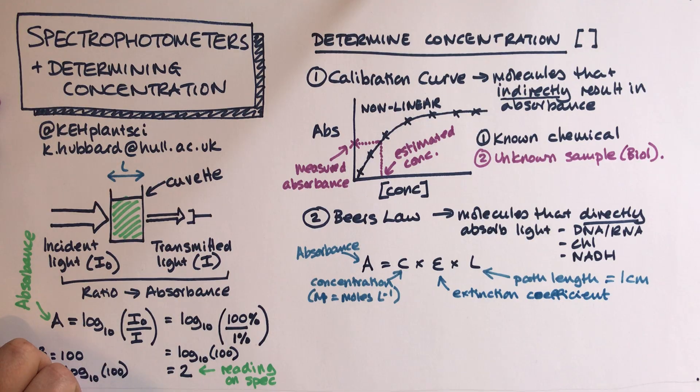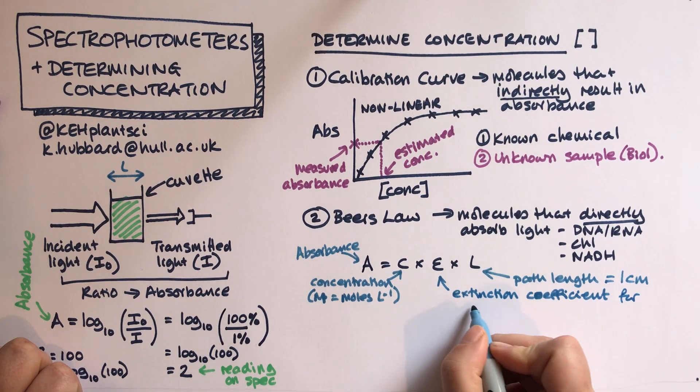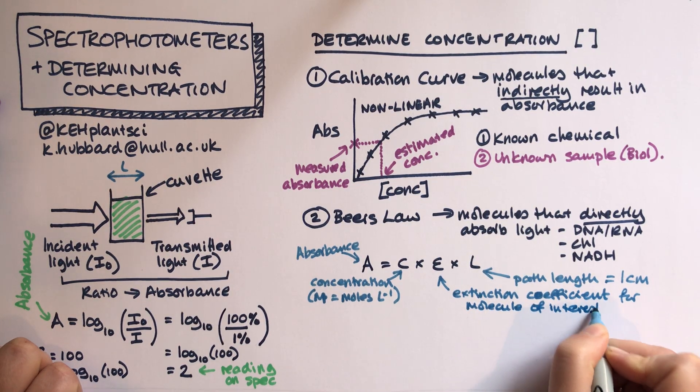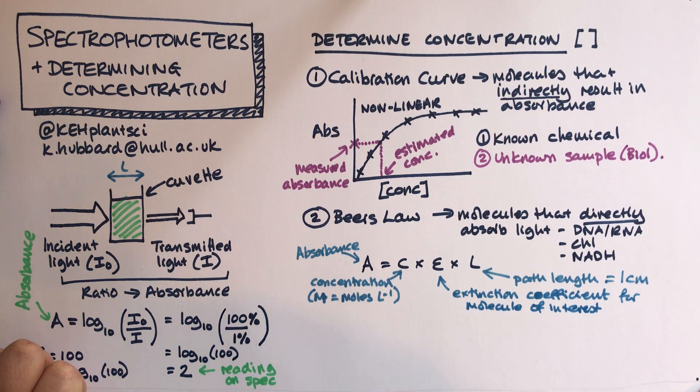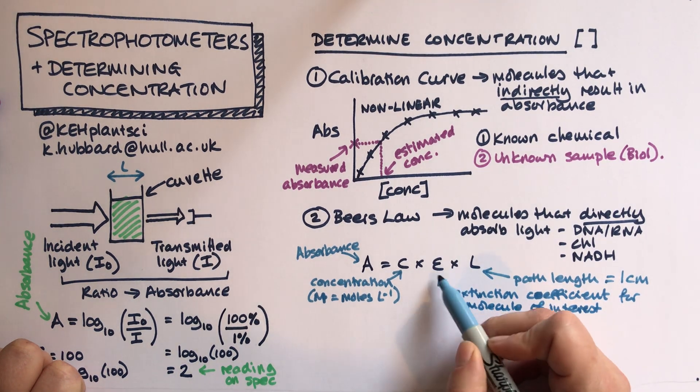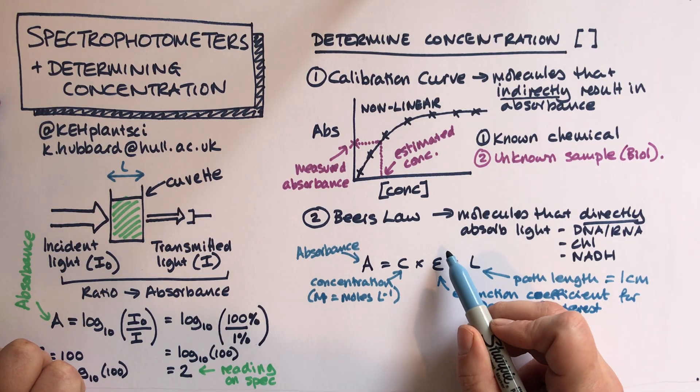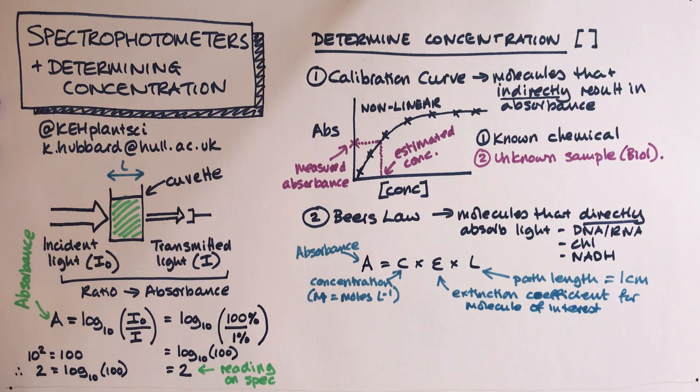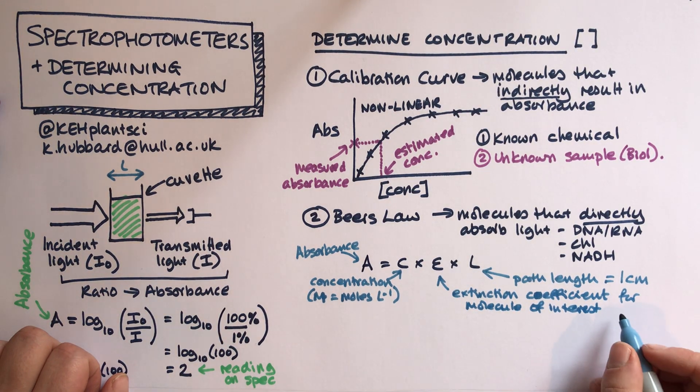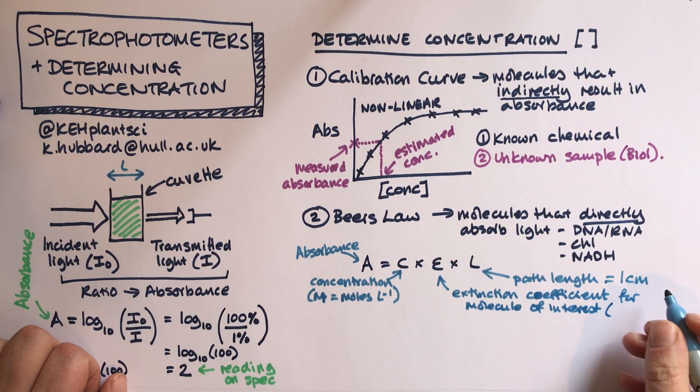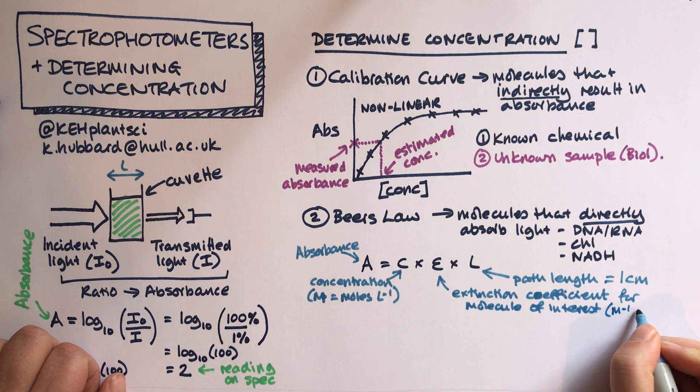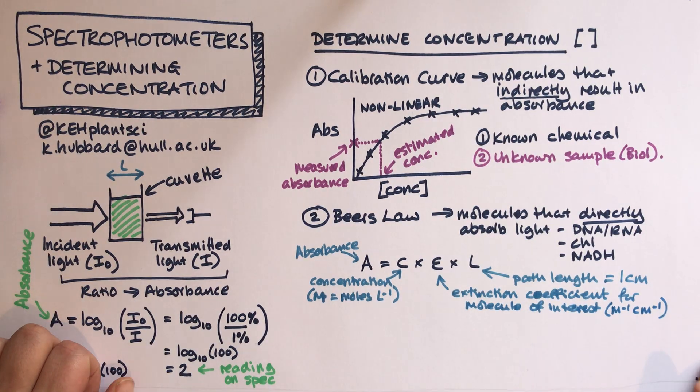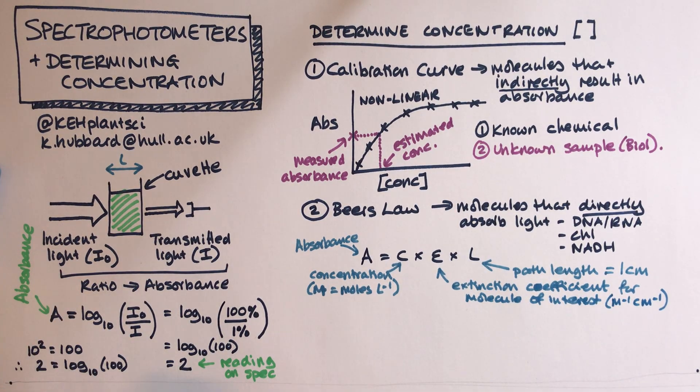That just leaves epsilon, and that is what we call the extinction coefficient. That's basically a measure of how absorbent the molecule itself is. If you just got a pure solution of that molecule, how much light would it absorb? Different molecules have a different extinction coefficient, which is effectively just a conversion factor to get us from absorbance to concentration. The extinction coefficient has a very weird unit, which is moles per centimeter, which is a bit weird but that's what's needed to make the maths work out.